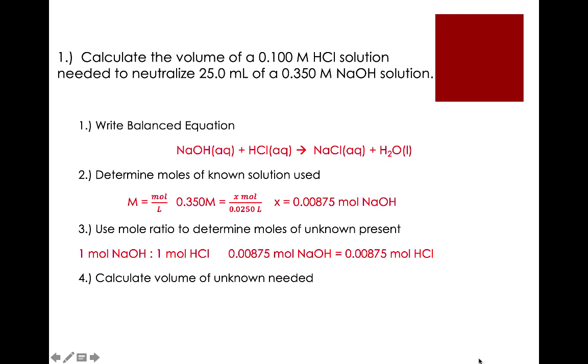Finally, I need to calculate what volume of 0.1 molar HCl will give me that many moles. Again, using the molarity equation, here I plug in the molarity of HCl and the number of moles I need, and calculate the volume. Doing so gives me a value of 0.0875 liters of HCl. Converting to milliliters, because that's a more convenient unit, I get 87.5 milliliters of HCl needed to completely neutralize 25 milliliters of 0.350 molar NaOH.